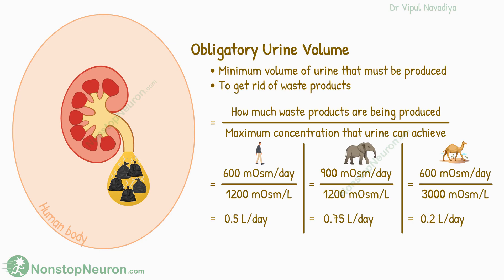In summary, obligatory urine volume is the minimum volume of urine that must be produced to excrete the waste products. It depends on the solute load produced every day and the maximum urine concentration.